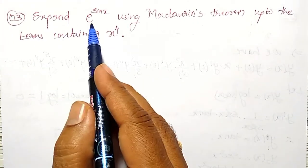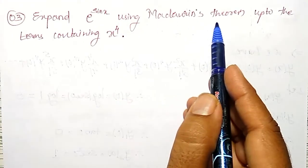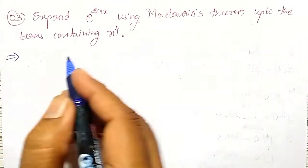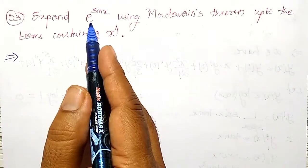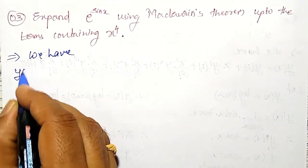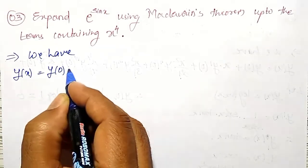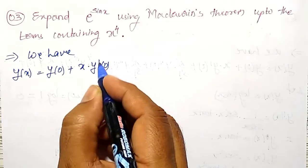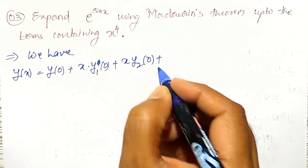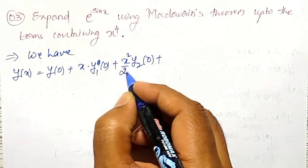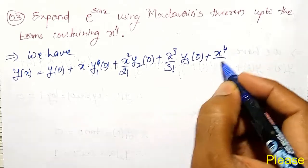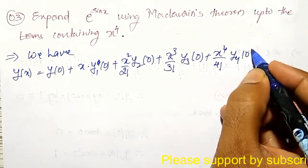I am going to expand e to the power sin x using Maclaurin's theorem up to the term containing x to the power 4. First I will write the Maclaurin's expansion up to the x to the power 4 term, then I will expand for e to the power sin x.